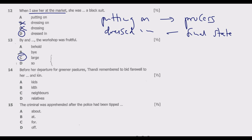Question fourteen: 'Before our departure for greener pastures, Tandy remembered to bid farewell to her ___ and kin.' Options: A: kids, B: kith, C: neighbors, D: family. Almost all of these can be correct, but 'kith' is the best answer. 'Kith' refers to one's friends, acquaintances, and neighbors, so 'kith' covers all the other options — kids, neighbors, and family are all subsets of 'kith.' Hence B is the best answer.